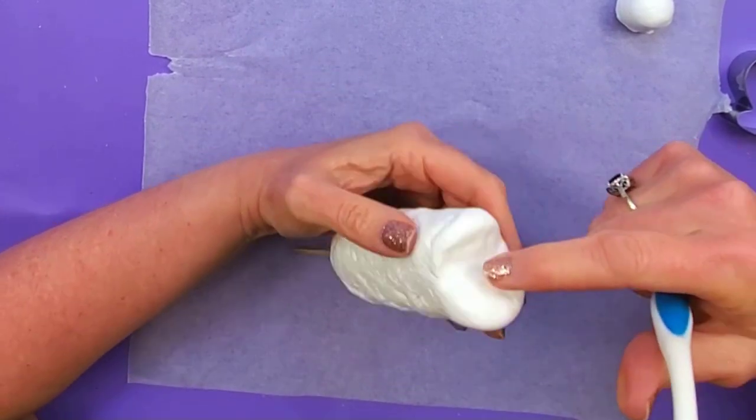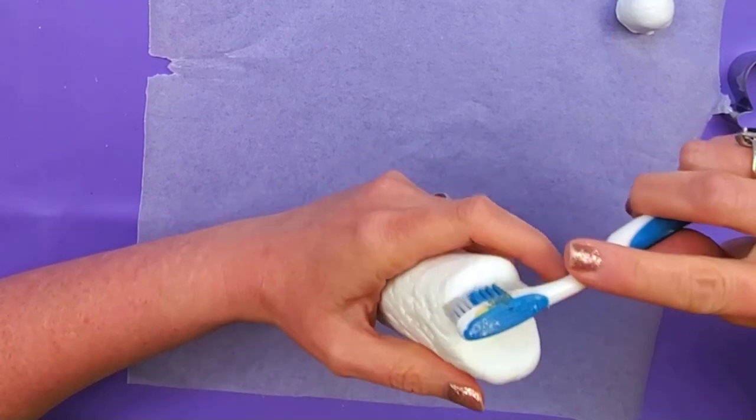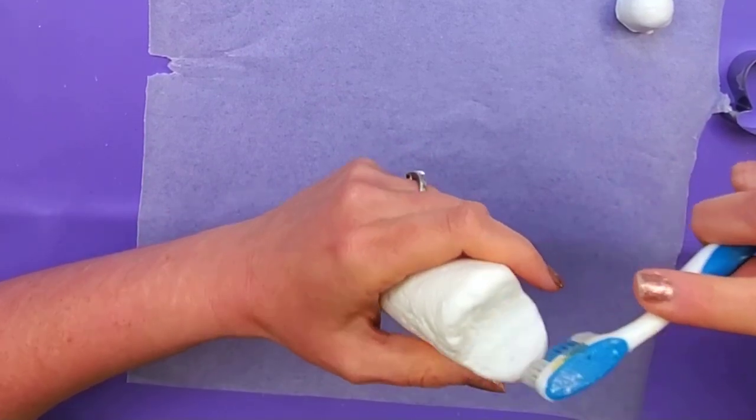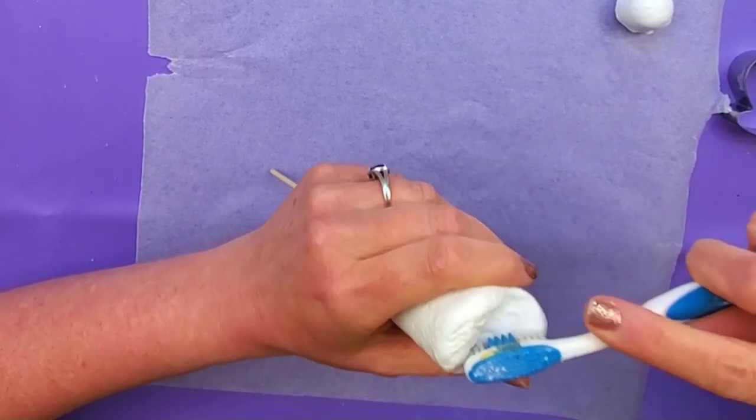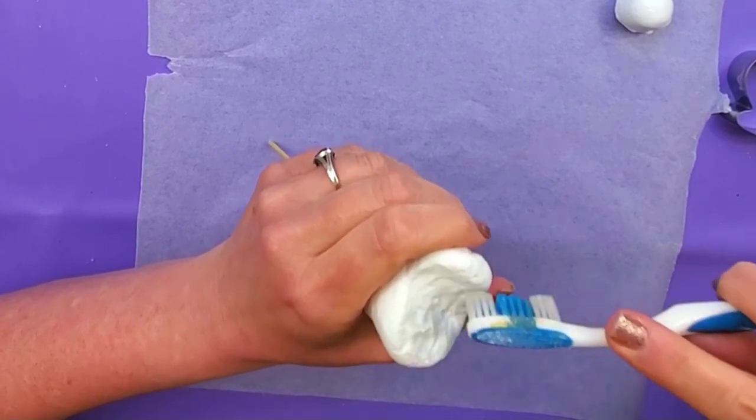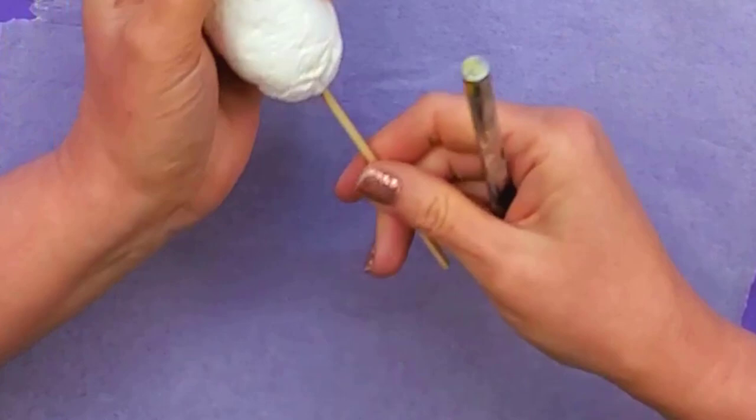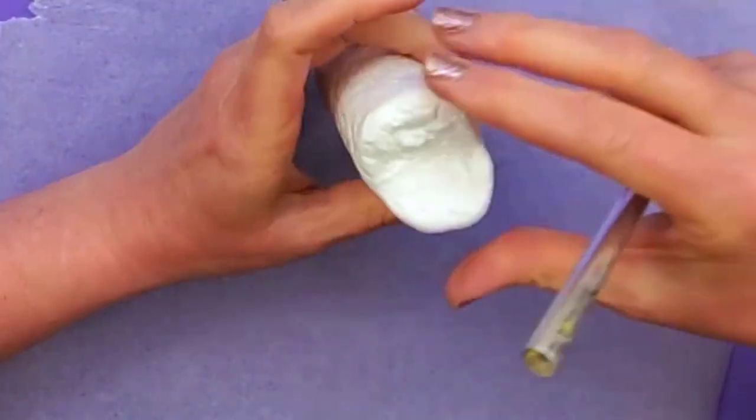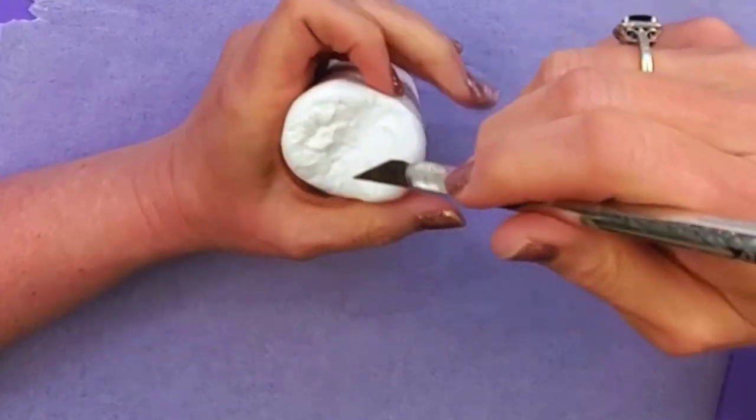Now for the open part, I'm gonna take my toothbrush and texture that as well, and then we're gonna add some other texture to that also. So for the hot dog part, I'm gonna take this out so I can show you easier. For the hot dog part, I'm gonna take an exacto knife.